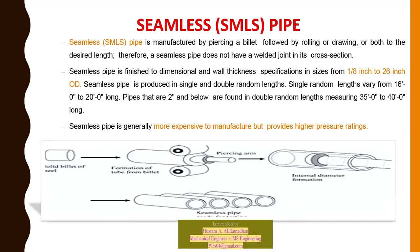Seamless pipe is manufactured by piercing a billet followed by rolling or drawing, or both, to the desired length. Therefore, seamless pipe does not have a welded joint in its cross section. It is finished to dimensional and wall thickness specifications in sizes from 1 to 10 inch, up to 26 inch OD. Seamless pipe is produced in single random length (16 to 20 feet) and double random length (35 to 40 feet for 2-inch and below). It is generally more expensive to manufacture but provides a higher pressure rating.